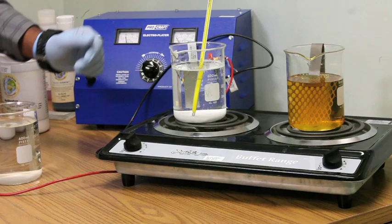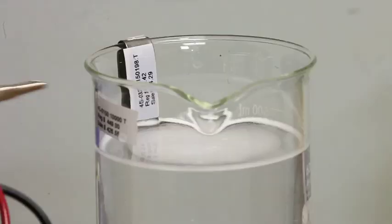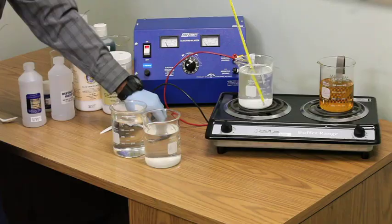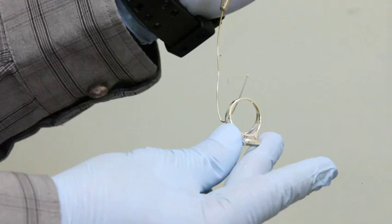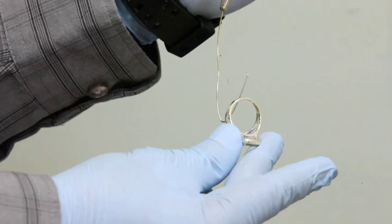Place the positive lead of the rectifier on the stainless steel anode and the negative lead to a hooked gold wire. Suspend the jewelry piece from this wire. Lower the piece into the ElectroClean ring and agitate for two minutes.